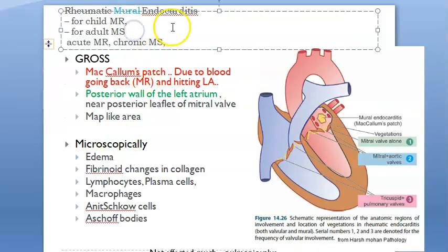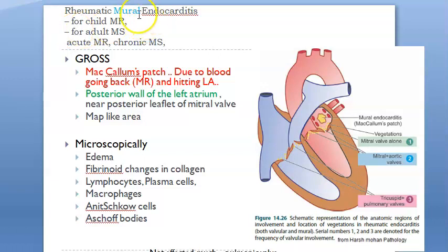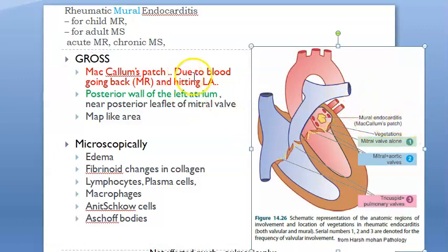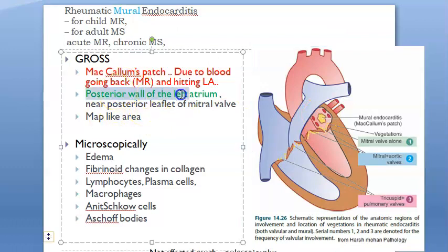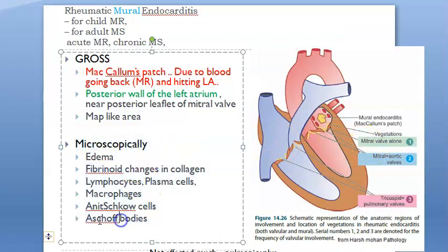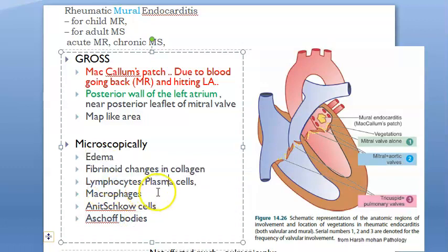Mural endocarditis: McCallum's patch occurs because of mitral regurgitation — blood flowing back hits the left atrium wall, causing a map-like lesion on the posterior wall of the left atrium, near the posterior leaflet of the mitral valve. The mitral valve is bicuspid, having only anterior and posterior leaflets. Microscopically you see Anitschkow cells, Aschoff bodies, macrophages, lymphocytes, edema, and fibrinoid changes.